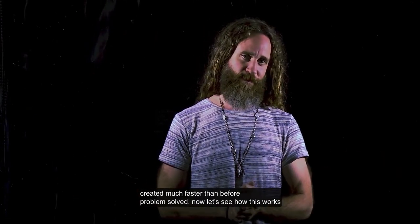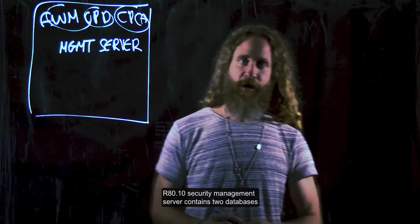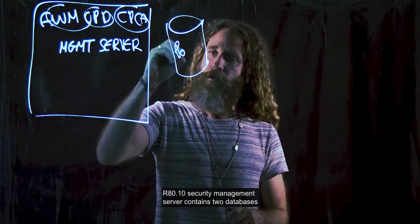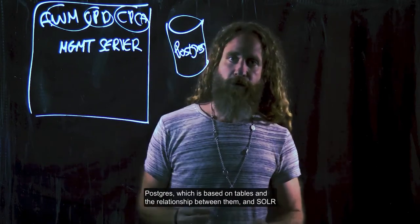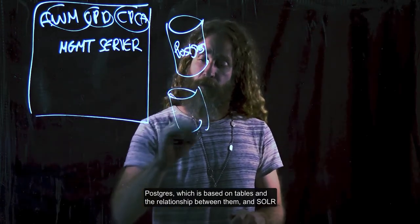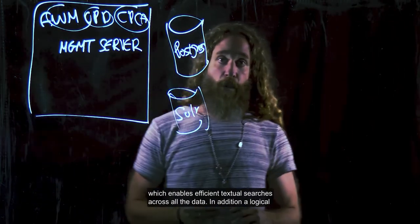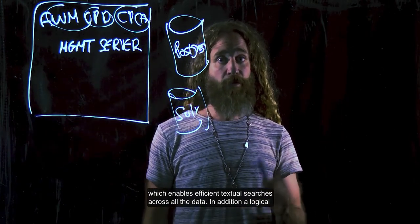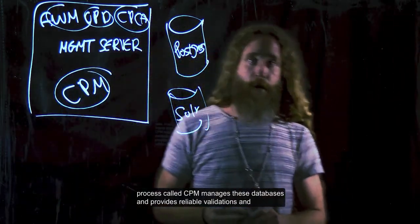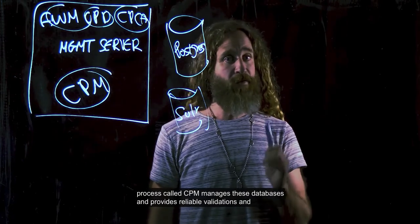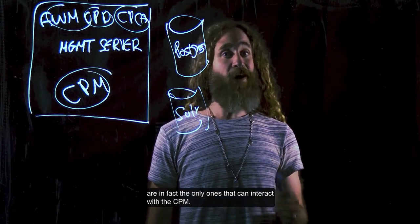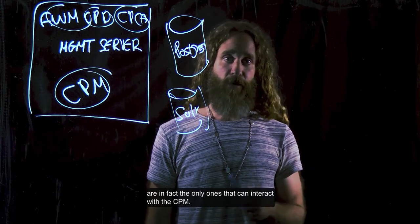Now let's see how this works. The R80.10 security management server contains two databases: Postgres, which is based on tables and their relationships between them, and Solr, which enables efficient textual searches across all the data. In addition, a logical process called CPM manages these databases and provides reliable validations and revisions for our users. The smart console GUI application and the REST APIs are in fact the only ones that can interact with the CPM.